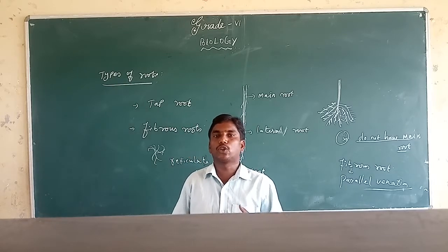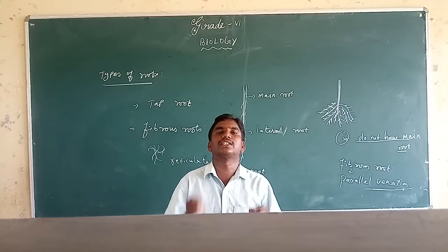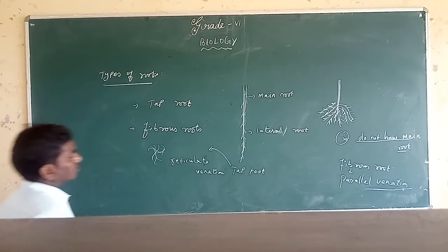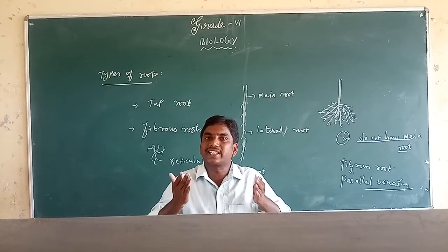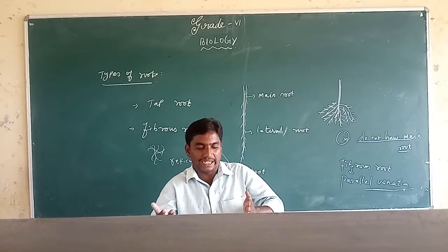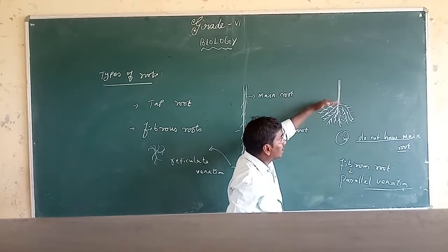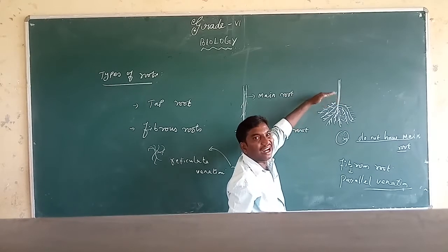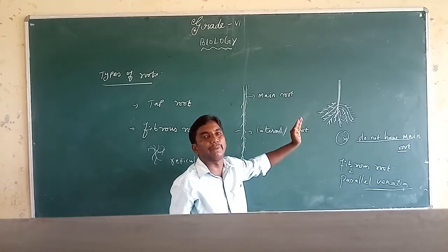The root is a very important part of the plant because it always absorbs water and minerals from the soil. Water and minerals are very important. The root always absorbs water and minerals from the soil. This root is under the ground, so you can't see it on top of the soil — it is always underground. This root always absorbs water and minerals from the soil.